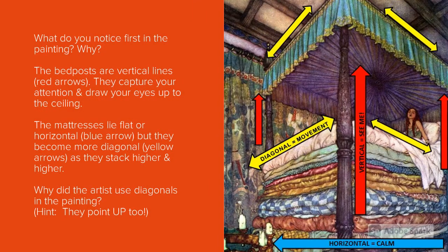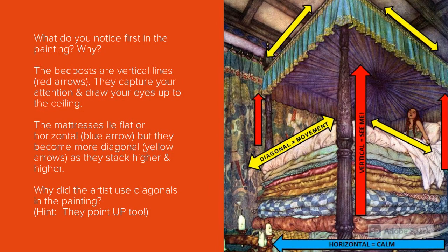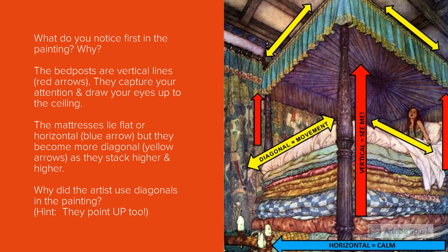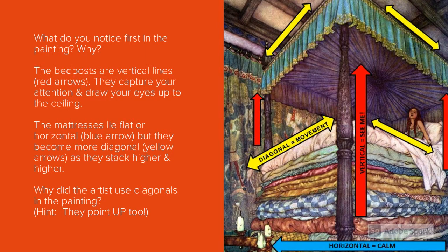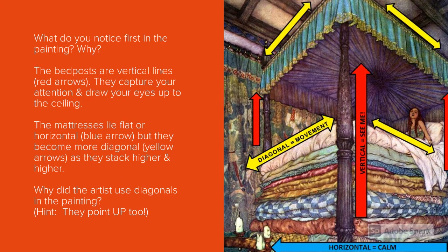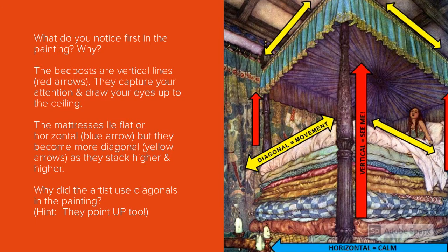So what do you notice first in the painting? Why? The bedposts are vertical lines — they capture your attention and draw your eye up to the ceiling. The bottom mattresses lie flat, or horizontal. But they become more diagonal as they stack higher and higher. Why did the artist use diagonals in the painting? Hint: they point up too.